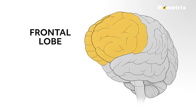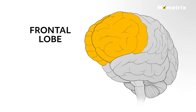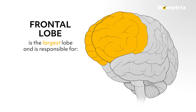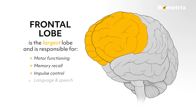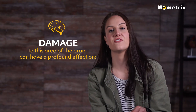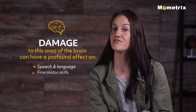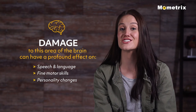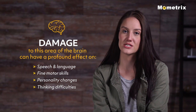The frontal lobe is in the anterior portion of the cerebral cortex, generally in the forehead area. It is the largest lobe and is responsible for motor functioning, memory recall, impulse control, language and speech, reasoning, and judgment. Damage to this area of the brain can have a profound effect on speech and language, fine motor skills, personality changes, and thinking difficulties.